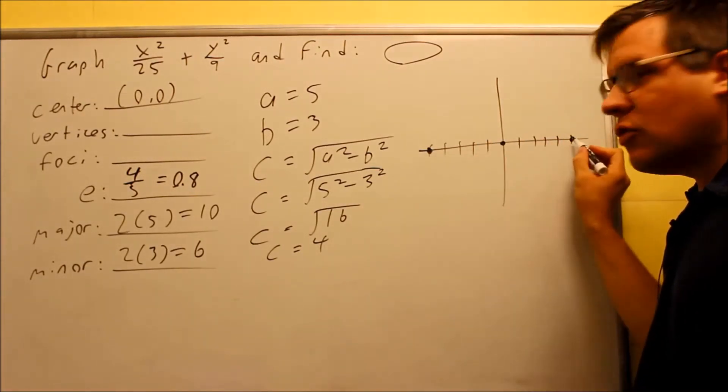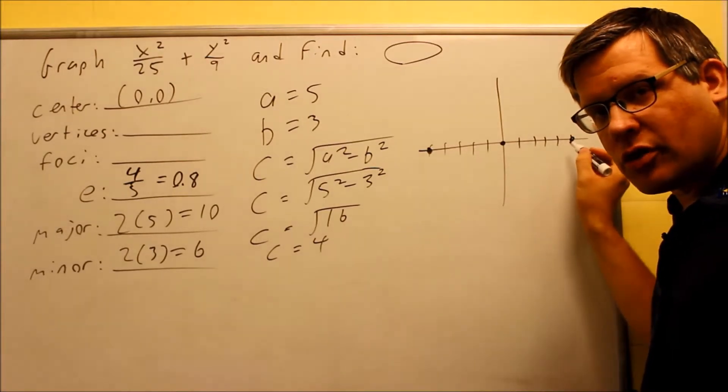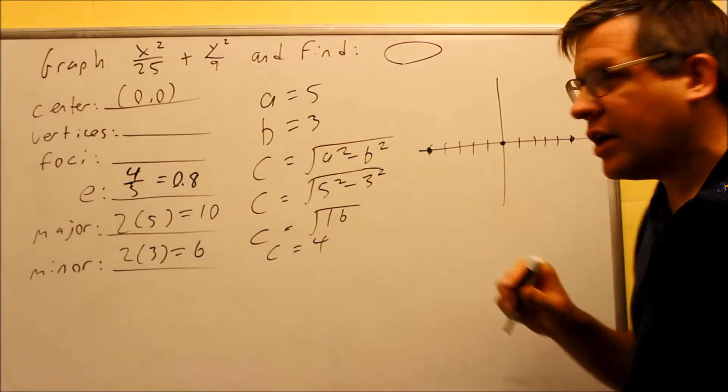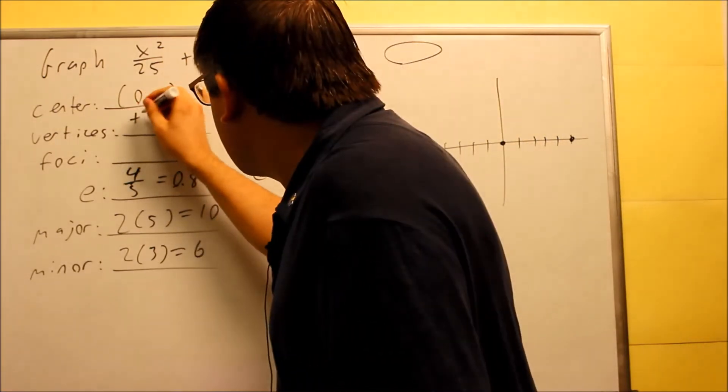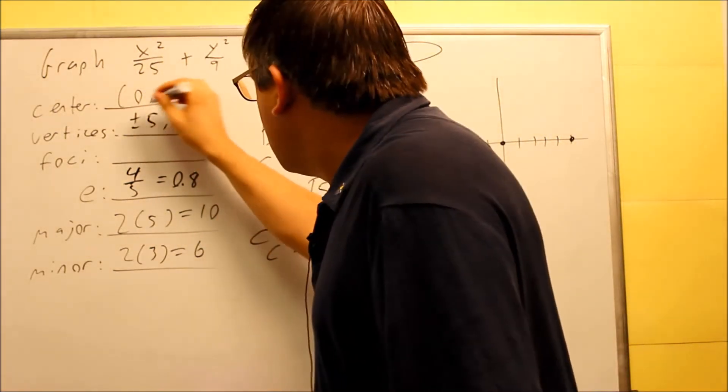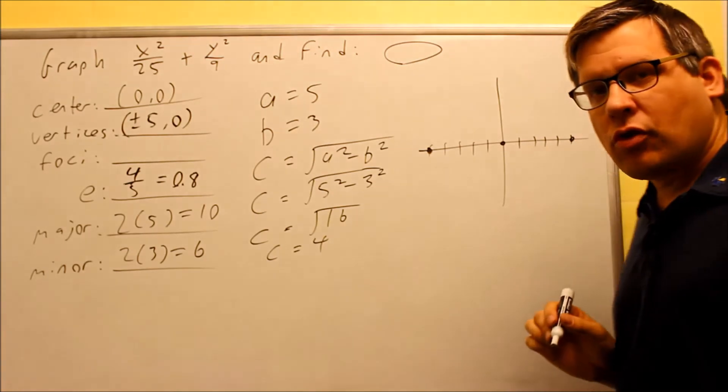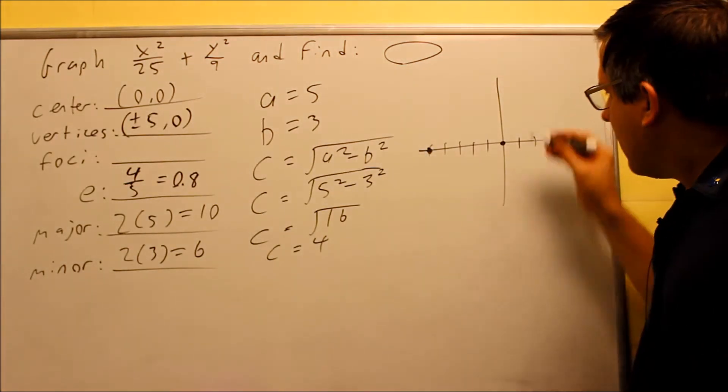These on each end, with the a value, those are your vertices. We can just go ahead and write those down here. The coordinates for those would be plus or minus 5, 0. That's the coordinates for our vertices.